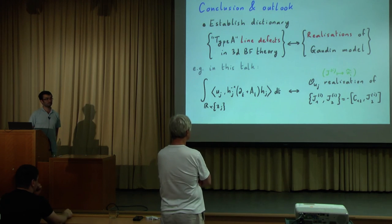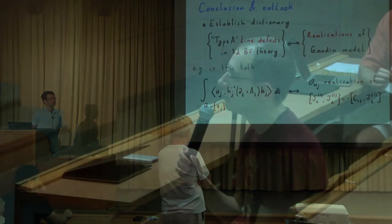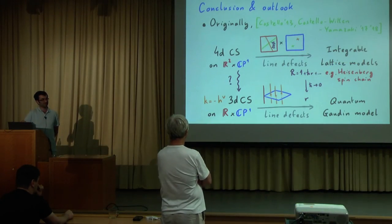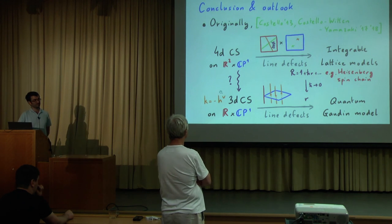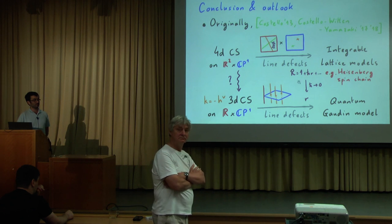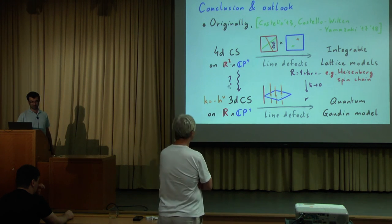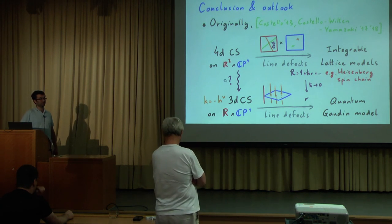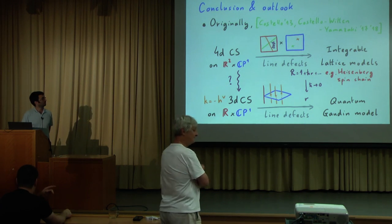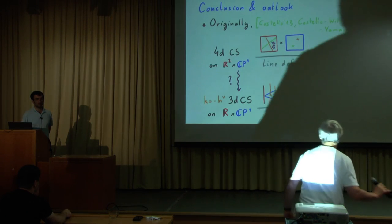Question: In principle, could you derive Gaudin by taking a limit of the spin chain for which the correspondence was known, instead of deriving it from scratch? Response: Yes, this is the last slide, and it would be nice to understand how to close this diagram — to get sort of a limit on the Chern-Simons side. This is the H-bar limit where you retain only information about the classical matrix. What's the corresponding H-bar limit on the other side? It's not obvious.